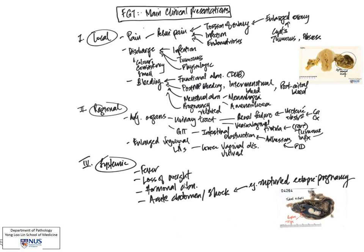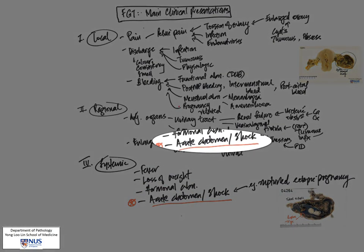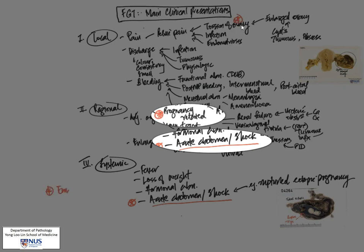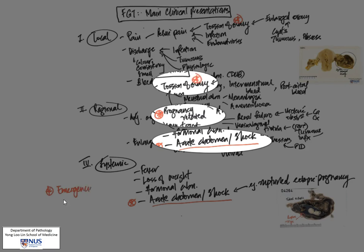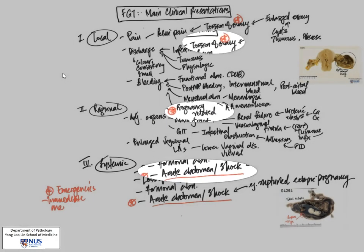So I just want to highlight some of the important symptoms to pay attention to, which may actually present as medical emergencies. And these include acute abdomen or shock, for example, due to a ruptured ectopic pregnancy, pregnancy-related bleeding, as well as pelvic pain, which is often acute in onset, secondary to torsion of the ovary. So these are emergencies. They will require immediate medical attention and possibly surgical attention as well.